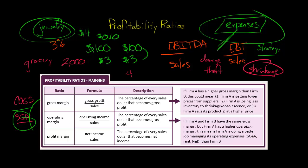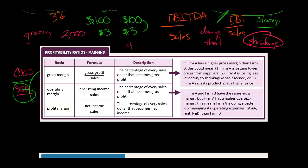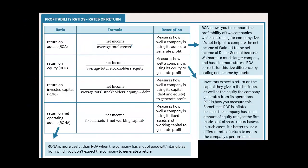We talked about margins. Now let's get to rates of return. With rates of return, this is another type of profitability ratio. What we're doing is taking a measure of profit and dividing it by something. With each different type of rate of return, I'm always taking some measure of profit and dividing it by something.